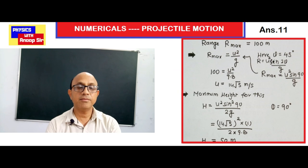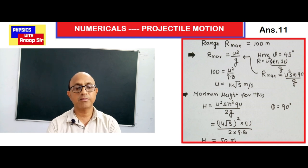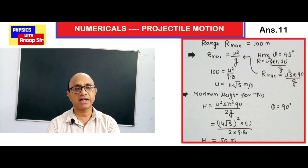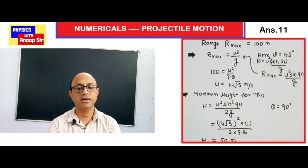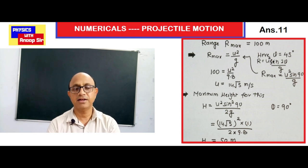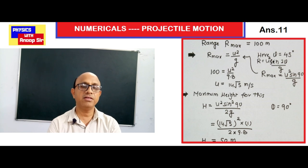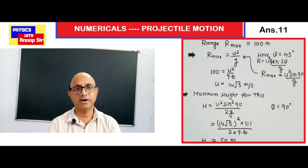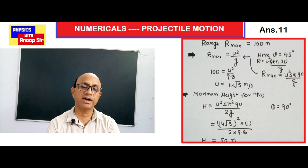In this question, the maximum range is given as 100 meters. We know that maximum range is achieved at 45 degrees. Using R = u² sin2θ / g with θ = 45°, sin90° = 1, so R_max = u²/g. Placing values: 100 = u²/9.8, giving u² = 980, so u = 14√5 meter per second.